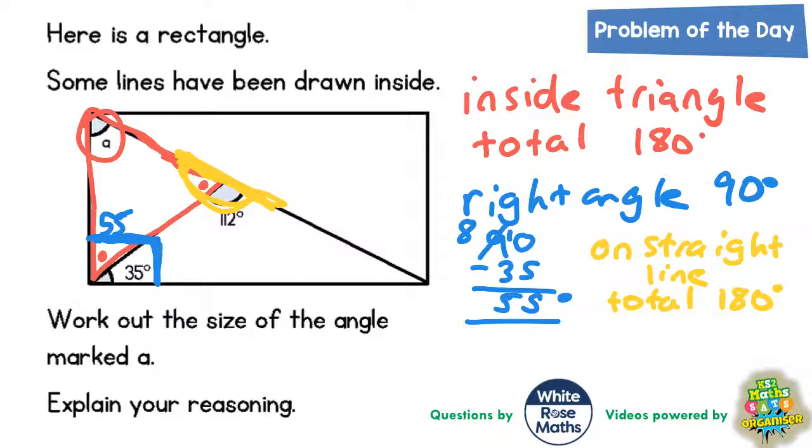Now we've already got this 112, so if we do 180 subtract 112 we'll have the other angle that's been marked with a red dot. Well 0 take away 2 we can't do, so borrow. The 8 becomes a 7 and the one we've borrowed makes that 0 into 10. 10 take away 2 is 8, 7 take away 1 is 6, and 1 take away 1 is nothing. So that's 68 degrees.